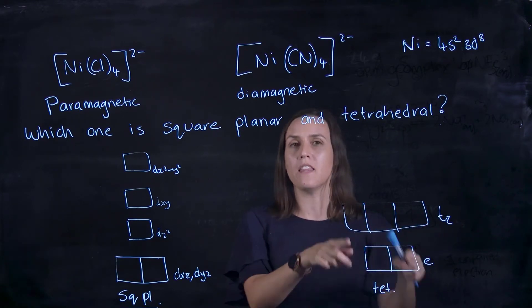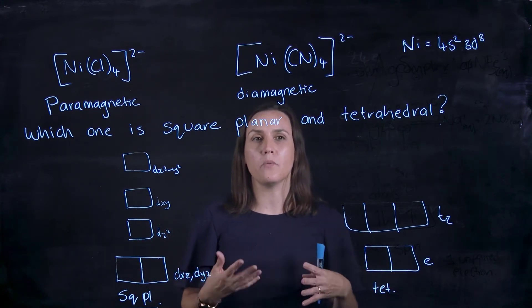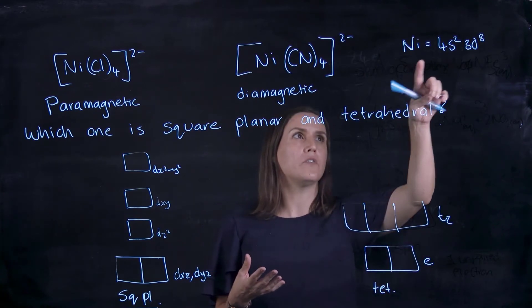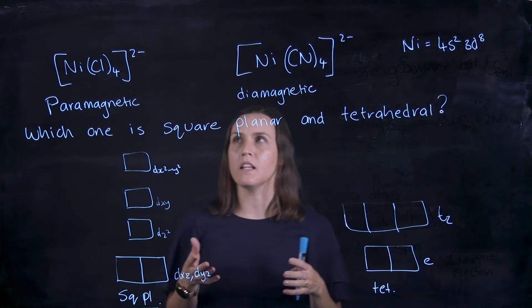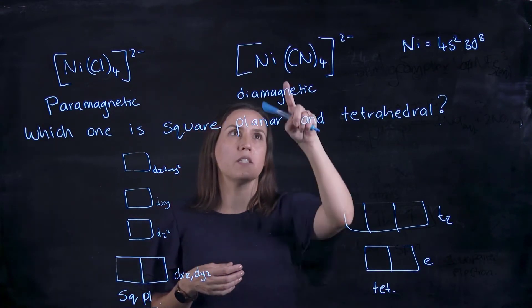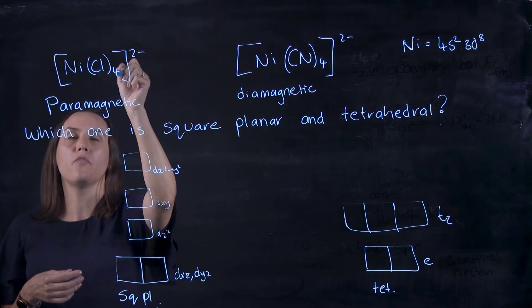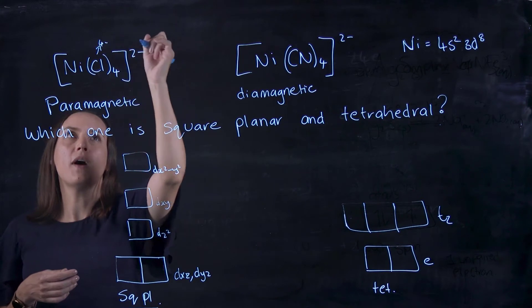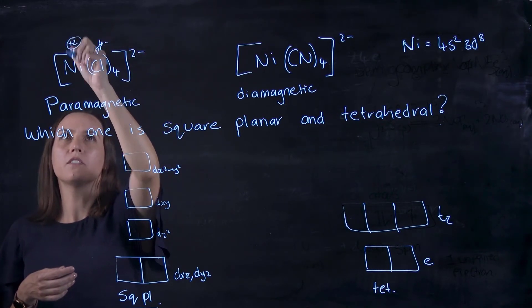To work out how many electrons we're assigning, first we need to look at the charge on nickel. Nickel is 4s² 3d⁸. Let's work out the charge. We've got four minuses, we've got 2 minus overall, so therefore nickel must be +2.